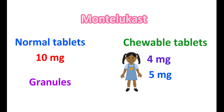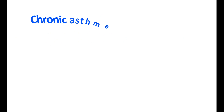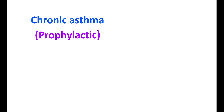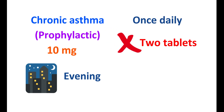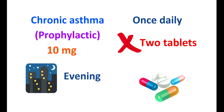In the form of granules, Montelukast is available at a strength of 4 mg per packet. For the treatment of chronic asthma, Montelukast is used prophylactically to prevent recurring attacks and is given at a dose of 10 mg in the evening. This medication should be given only once daily — taking two tablets per day is not recommended due to toxic effects. Montelukast is also available in combination products, so never combine two medications that both contain Montelukast.